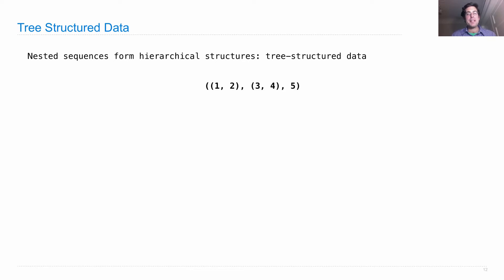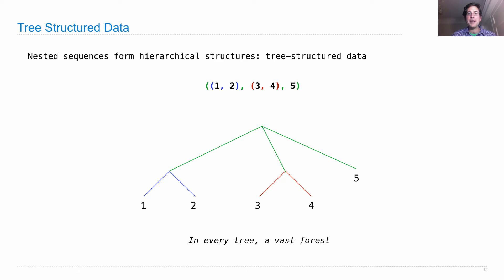Let's look at these tuples within tuples. One, two, three, four, five is a tree. I've highlighted in different colors different parts of the tree, and in every tree there is a vast forest of smaller trees. Here you see one, two, three, four, and five pictorially, where the contents of the green tuple is one, two, and then three, four, and then five. These are called the three branches of the tree. This branch contains two more branches, this branch contains two more branches as well, and this branch just contains the number five.